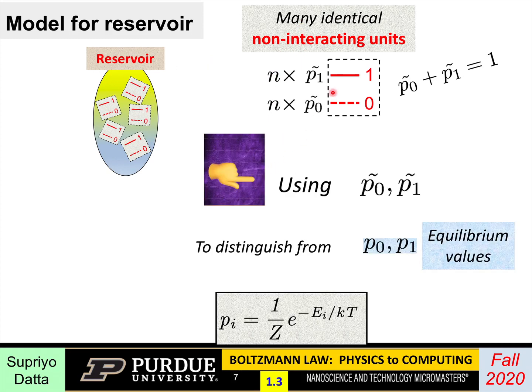Now notice that I'm using this tilde. And the reason is, I want to distinguish it from the probabilities, these equilibrium probabilities of the system that we had introduced earlier. For the Boltzmann law, we use this p sub i to denote the probability of a system being in state i. Just to distinguish from that equilibrium probability, we are using this tilde. And of course, the reservoir could also be in equilibrium, in which case these probabilities would be given by the p's without tilde. But just to keep it general, we have the tilde.